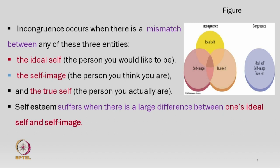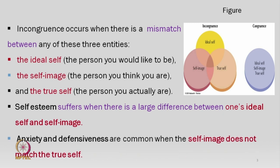If these three are mismatched or incongruent, we may have problems. If mismatched, we may have problems with self-esteem as well as high levels of anxiety and defense mechanisms. Self-esteem suffers when there is a large difference between one's ideal self and self-image. If self-image does not match with the true self, we have high levels of anxiety and defensiveness — broadly, high levels of neuroticism — and this is the cause of abnormal behavior as per this theory. On the other hand, if these three are matched, we have characteristics of a fully functioning person.